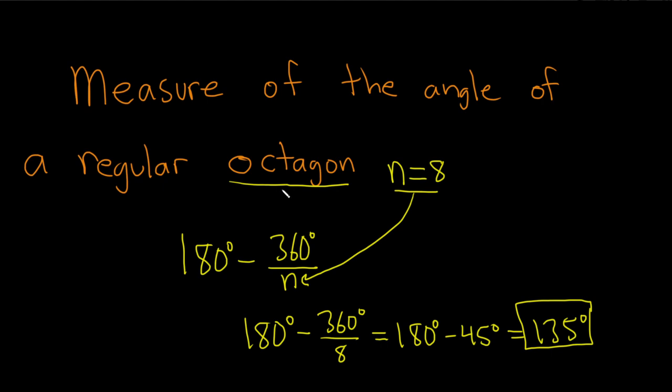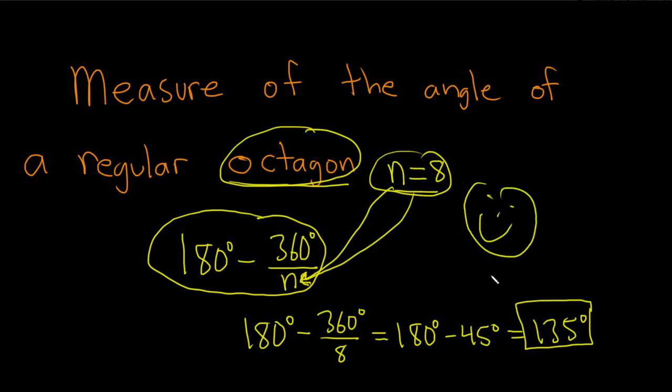So again, the key to doing this problem is to know that this formula gives you the measure of an angle of a regular n-gon, and an octagon has 8 sides. So all you have to do is memorize these two things and then you plug in the 8 into this formula and it gives you the answer. I hope this video has been helpful. Good luck. Thank you.